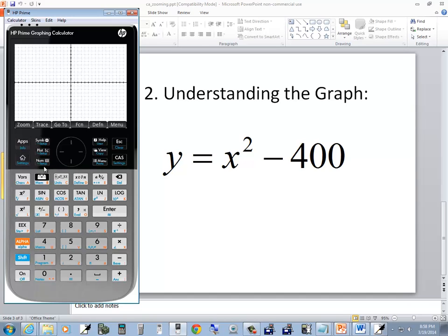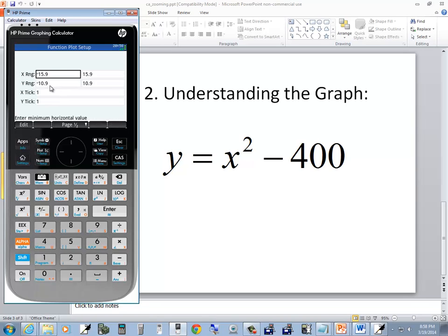Well, notice all of these have setups to them. So if I do shift plot, it'll go to my setup and see my X range says negative 15.9. Let's change that to a negative 40. Enter. And I'm going to change this upper to a positive 40. Enter. The Y range, I'm going to change this to a negative 500. Enter. And this will change to a positive 100.